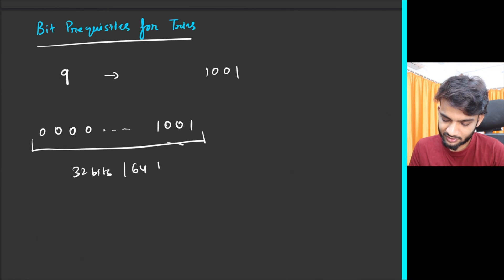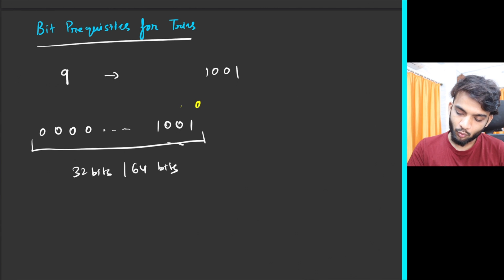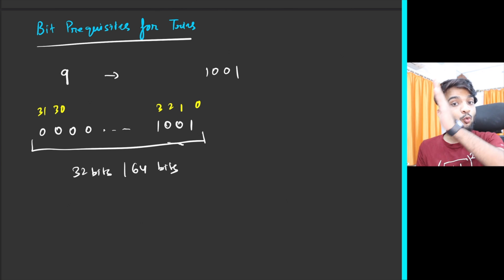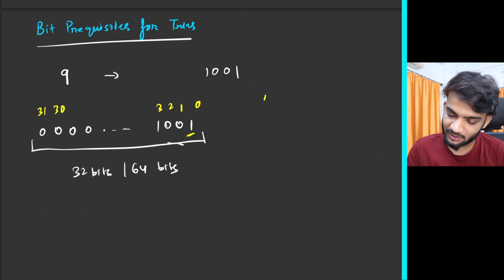A computer always stores it something like this: 000...1001. If it's an integer, this is 32 bits. If it's a long long, it's 64 bits. That is how the computer stores it.